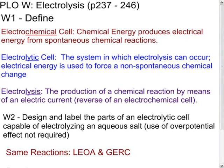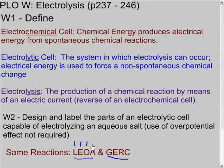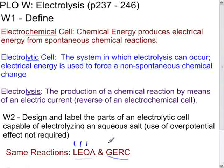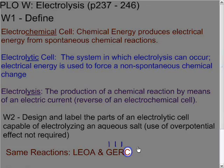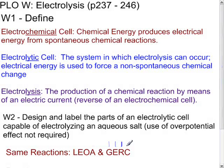Now what is going to be the same between electrochemical cells and electrolytic cells is our mnemonic LEOLA and GERC. Loss of electrons is oxidation, which occurs at the anode. Gain of electrons is reduction, which occurs at the cathode. So our anode and cathode reactions will be the same. There will be oxidation at the anode and reduction at the cathode.